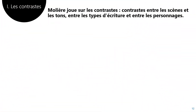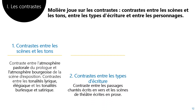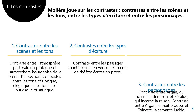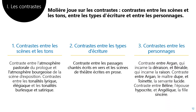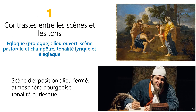Ce que l'on peut observer tout d'abord, c'est que Molière adore jouer sur les contrastes : contrastes entre les scènes et les tons, contrastes entre les types d'écriture, contrastes entre les personnages. Par exemple, le prologue situe la scène dans un lieu ouvert, doux, champêtre, paradisiaque où domine la tonalité lyrique. Or, tout de suite après ce prologue, nous basculons sans transition dans un lieu clos, fermé, étouffant, dominé par un fou avec une tonalité burlesque. Ce premier contraste entre le prologue et la scène d'exposition est saisissant et provoque le rire chez le spectateur. On observe d'ailleurs le même contraste entre le deuxième acte et le deuxième intermède musical.